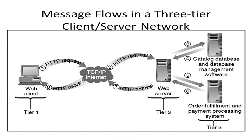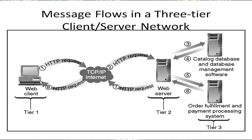This diagram shows the message flow in a three-tier client-server network. In this architecture: the database tier manages all the database; the middle tier contains most of the application logic and handles communication between the other tiers; and the client tier is the interface between the user and the system.